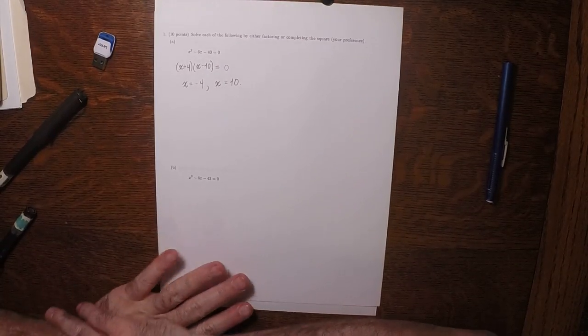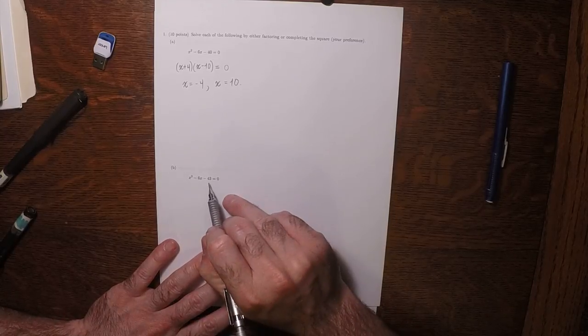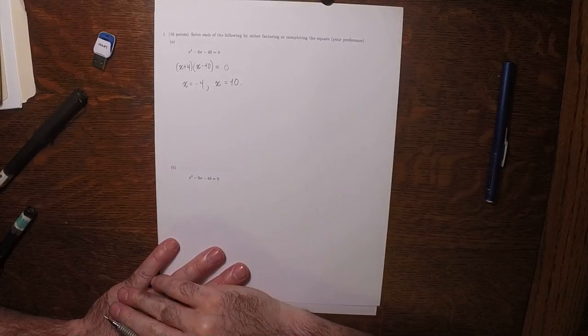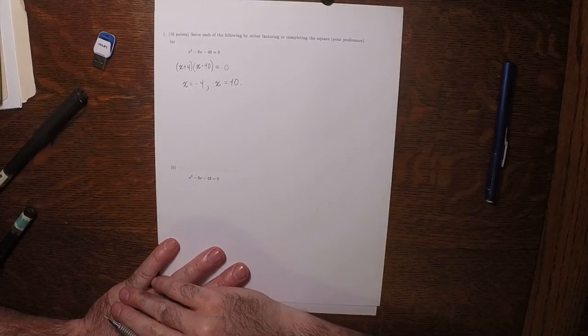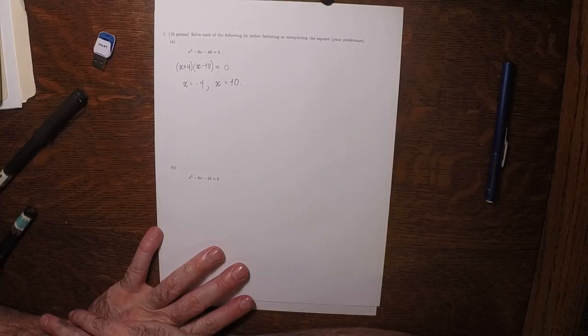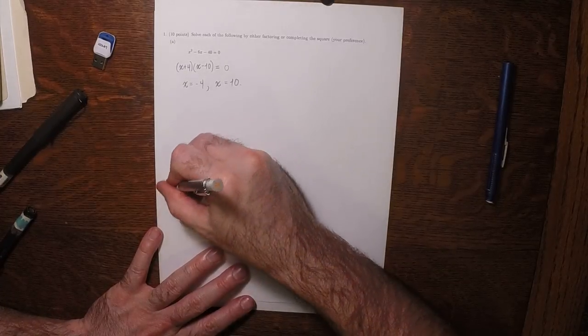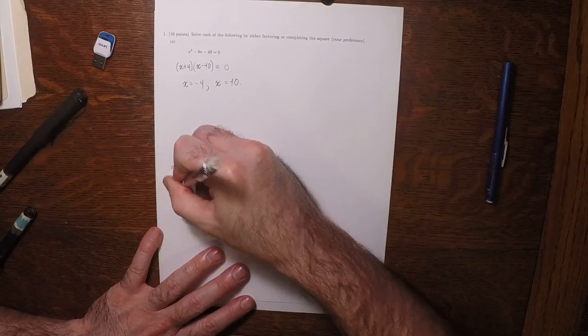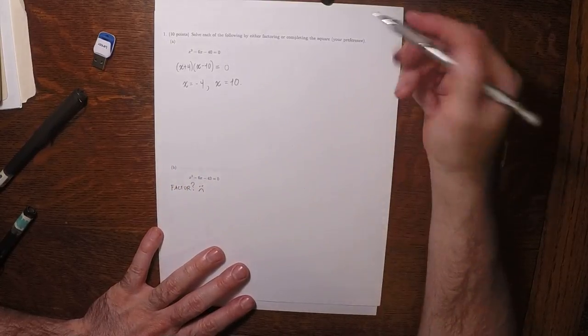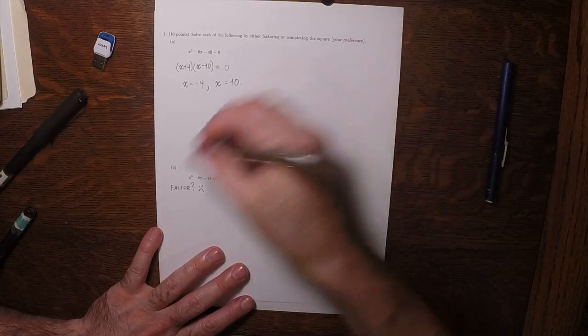So now for part B, however, can you think of two numbers whose product is negative 43 and whose sum is negative 6? No, that's not going to work. So then factoring won't work.